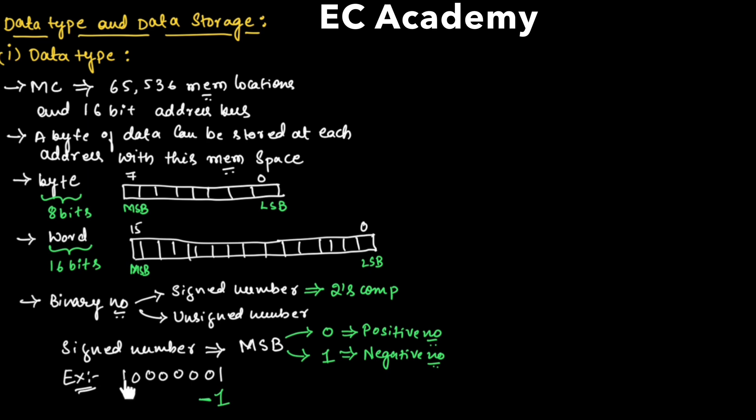For example, if in this MSB location we had 0, the number would have been a positive number. This is how signed and unsigned numbers are represented in the binary number system.